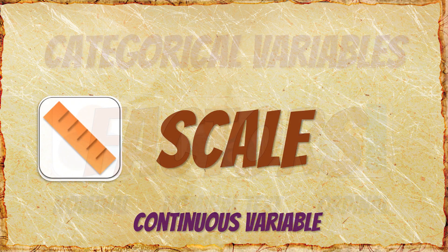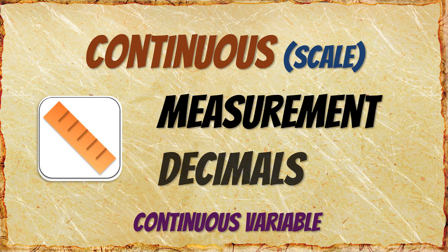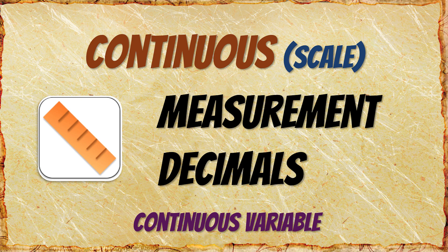The fourth level of measurement in JASP is continuous numeric data, or what SPSS calls scale data. Continuous data are signified by the yellow ruler, because they are measuring something. Scale data often have decimals. Continuous variables do not have levels like the categorical variables. However, you can change the level of measurement for any variable.